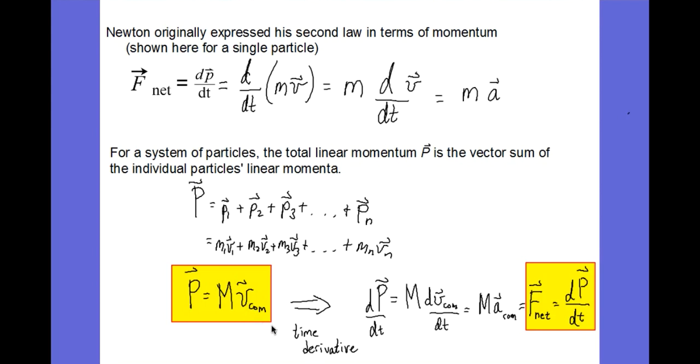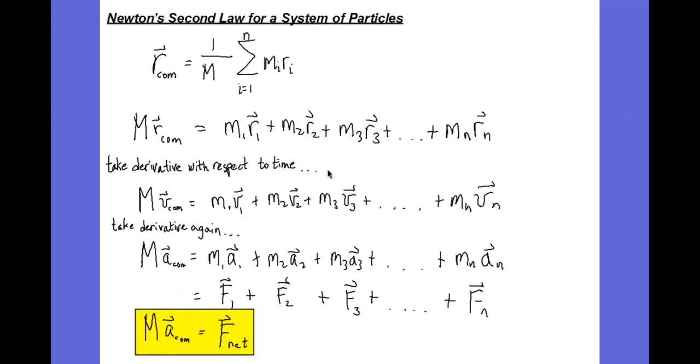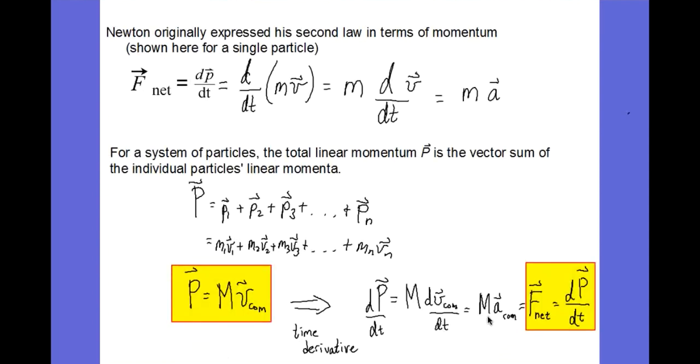And if I take the time derivative of this equation, we know that the time derivative of velocity is acceleration. And once again, from the lesson from Section 9.3, we showed that total mass times acceleration of the center of mass is equal to the net force. So I can replace this total mass times the acceleration of the center of mass with net force. And we come up with Newton's second law applied to a system of particles that says the net force acting on a system of particles is equal to the time rate of change of its momentum.